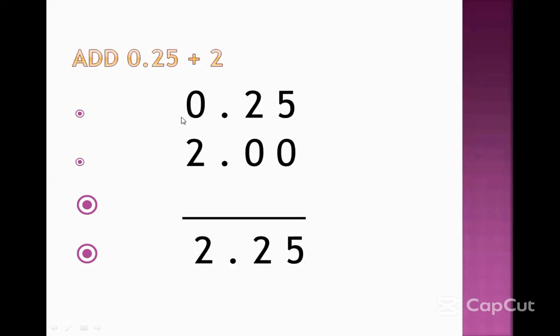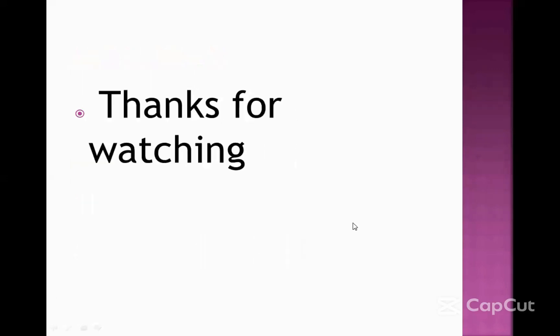One more thing: when we pronounce a decimal number like 0.25, after the point we say the digits one by one — not 'twenty-five' but 'two, five.' Okay students, thanks for watching.